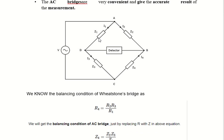Here there are four arms: instead of R1, R2, R3, and R4 as in a Wheatstone bridge, here it is Z1, Z2, Z3, and Z4. I1, I2, I3, I4 are the currents passing through these arms. When the potential between points B and D become equal, there is no current flow through the detector — when VB equals VD, no current flows through the galvanometer.